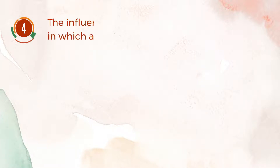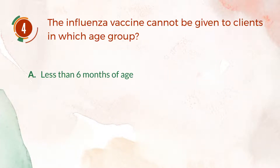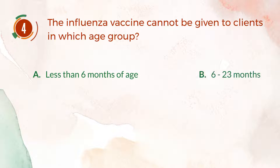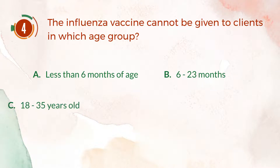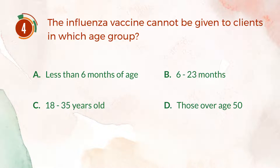Number 4. The influenza vaccine cannot be given to clients in which age group? A. Less than 6 months of age. B. 6 to 23 months. C. 18 to 35 year olds. D. Those over age 50.